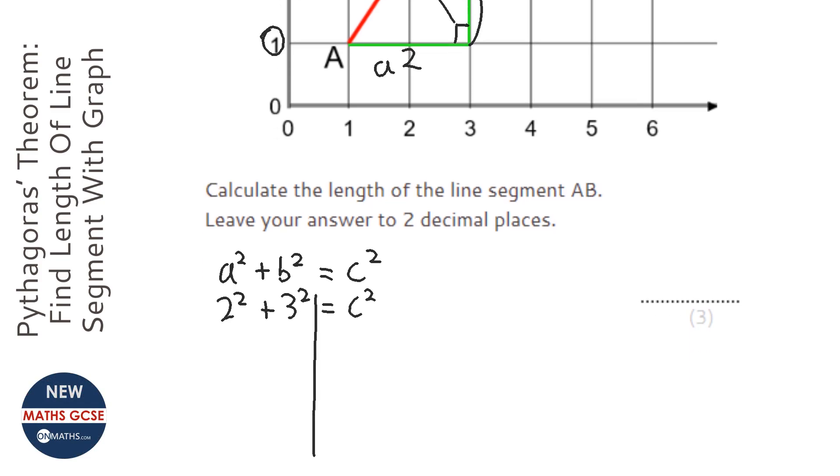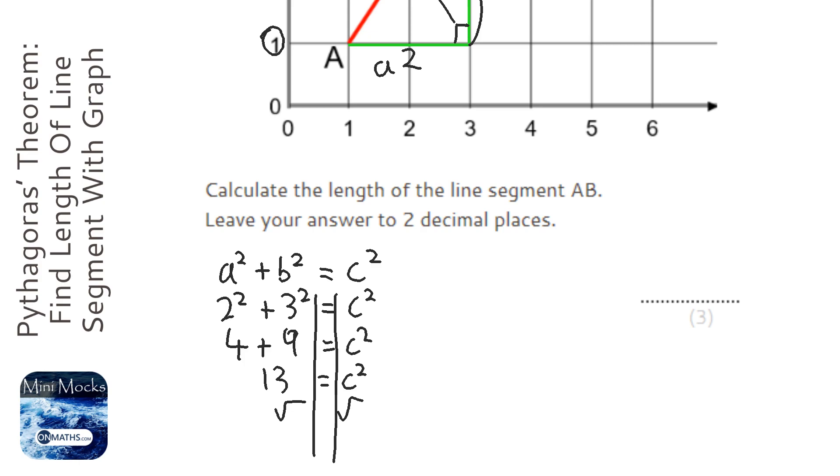Let's put our lines in. So it's going to be four plus nine equals C squared. Thirteen equals C squared. Square root both sides. And let's get my calculator. So square root of thirteen is three point six zero five five equals C.